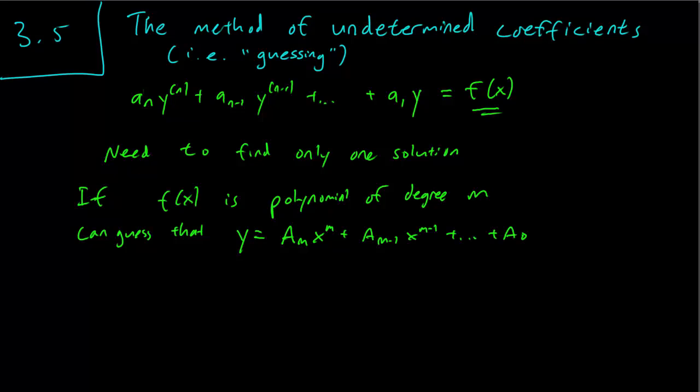And this is a reasonable guess, because you know that the derivative of a polynomial is a polynomial. So it's likely that when you take the derivatives, you still get polynomials, you add them together and you get the correct one. There's no real reasoning behind this, it's just a guess, but it's a pretty good and reasonable guess.